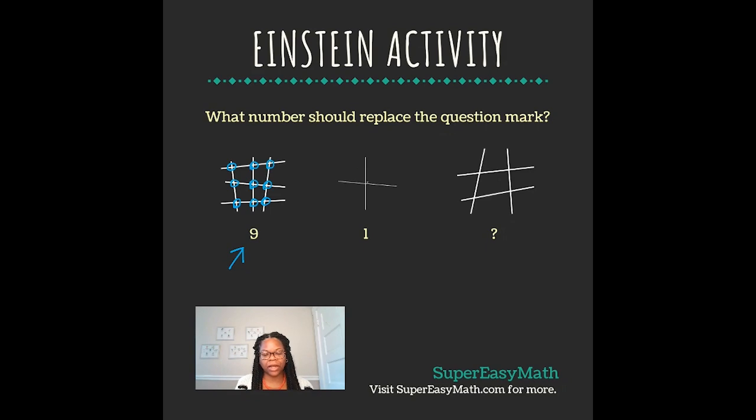For the second area we have one intersection, and in our last area we have four intersections, so four is the number that should replace the question mark.